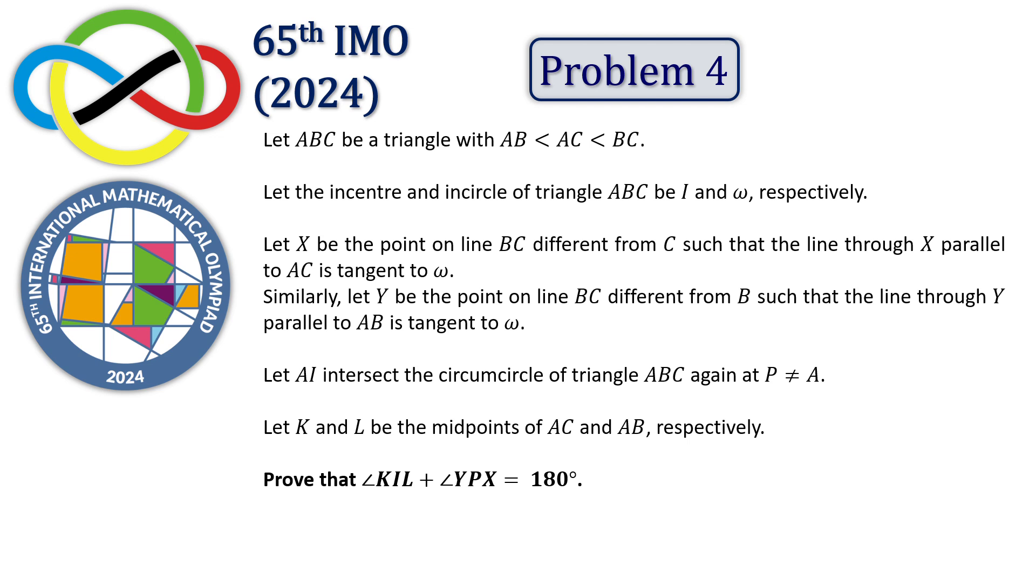The student must be familiar with geometric terms. From the first statement, in triangle ABC, AB is the shortest side, AC is longer than AB, and BC is the longest side. I is the incenter of the triangle. The incenter of a triangle is the intersection point of the three interior angle bisectors.